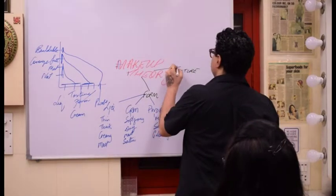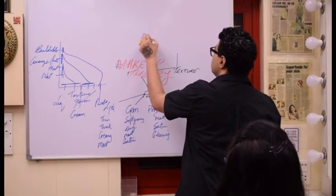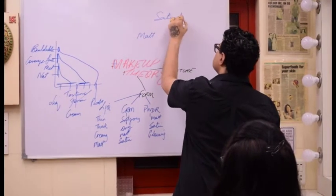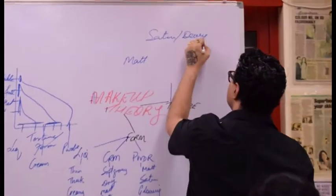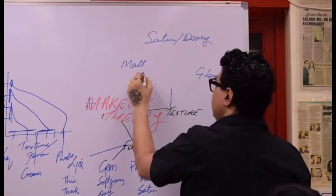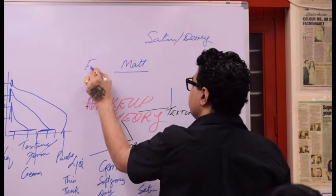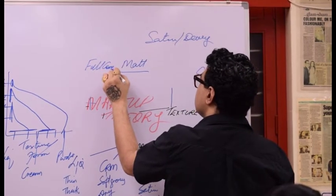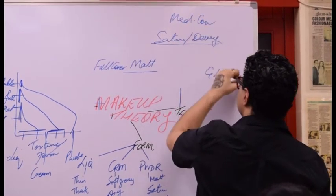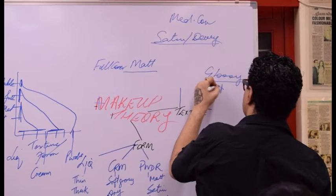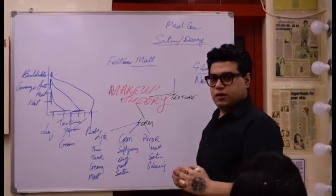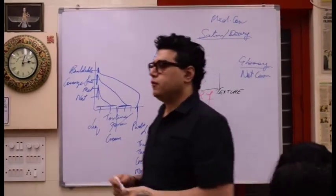You have to understand texture — this refers to matte, satin, dewy, and glossy. Anything which is matte is always going to give you full coverage. Anything which is satin or dewy will give you medium coverage. Anything which is glossy will give you natural coverage.